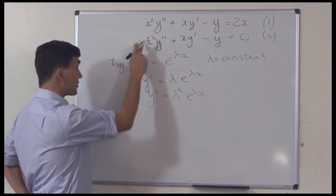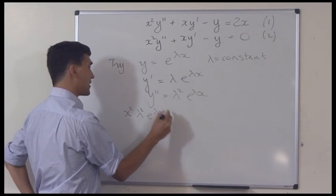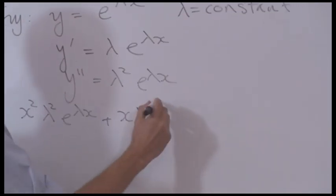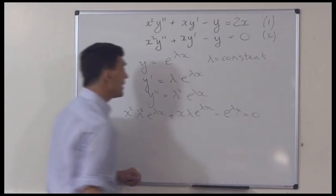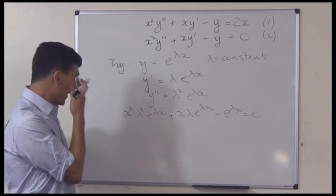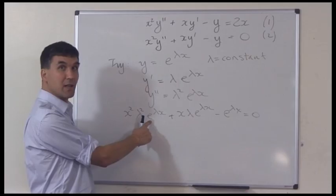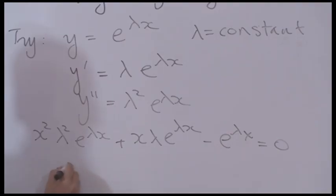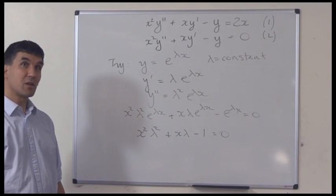We put these into that equation and we get x squared times lambda squared e to the lambda x — that's our y double prime — plus x times lambda e to the lambda x — that's our y prime — minus e to the lambda x equals 0. We have a common factor of e to the lambda x, which is never zero, so we can divide by it and we get x squared times lambda squared plus x lambda minus 1 equals 0. That would be the characteristic equation for this problem.